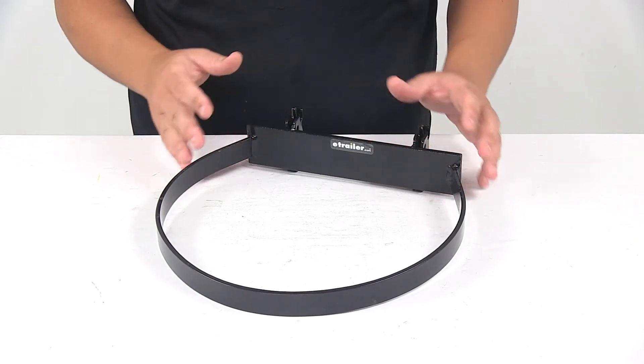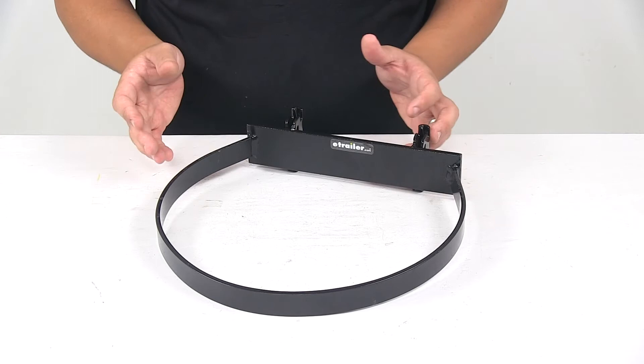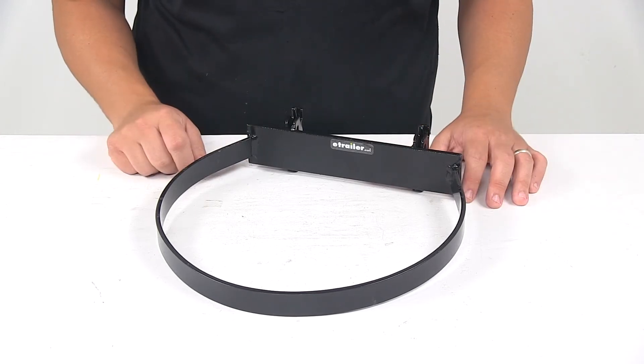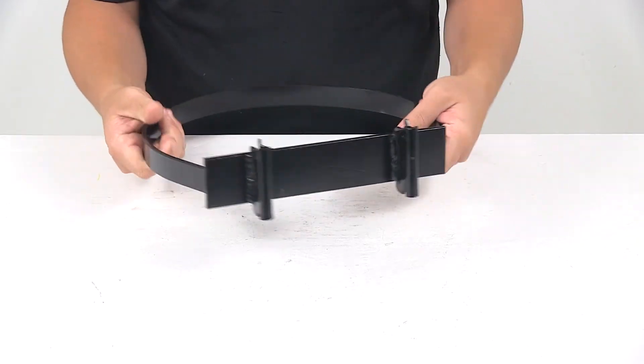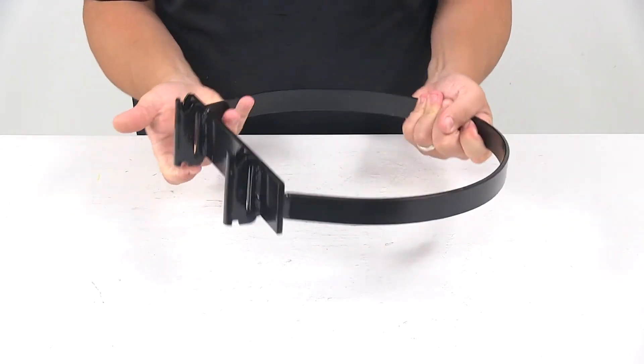With this type of system, there's no drilling required and you can reposition it anywhere along the eTrack system. We're looking at a sturdy steel construction. It's very strong and durable and has a nice black powder-coated finish to resist rust and corrosion.